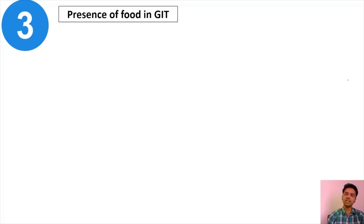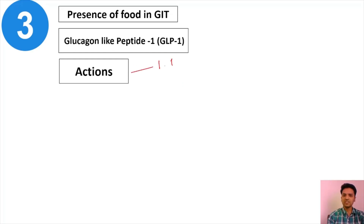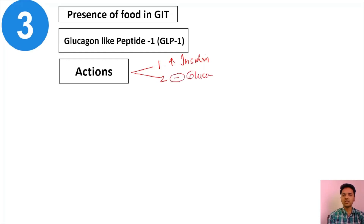Coming to the third group of drugs: whenever food enters the GIT — in the form of carbohydrates or amino acids — the GIT secretes a hormone called glucagon-like peptide 1 (GLP-1). GLP-1 has three important actions. First, it causes an increase in the secretion of insulin from the beta cells, increasing glucose-mediated insulin secretion.